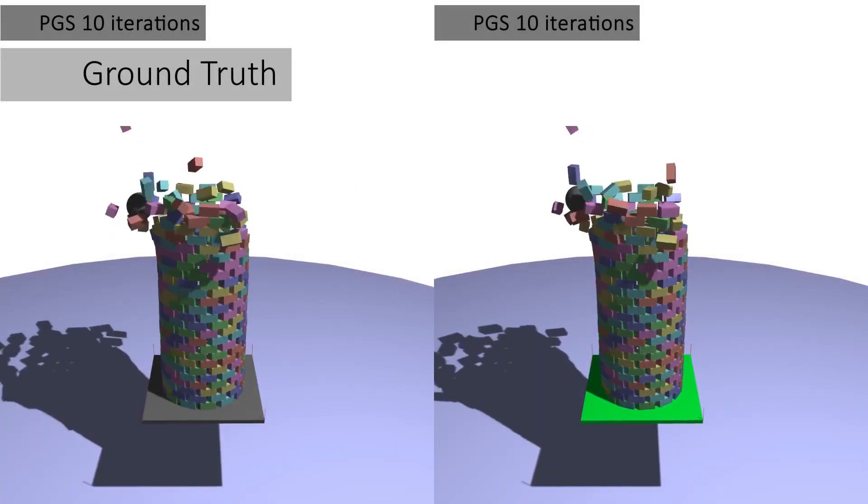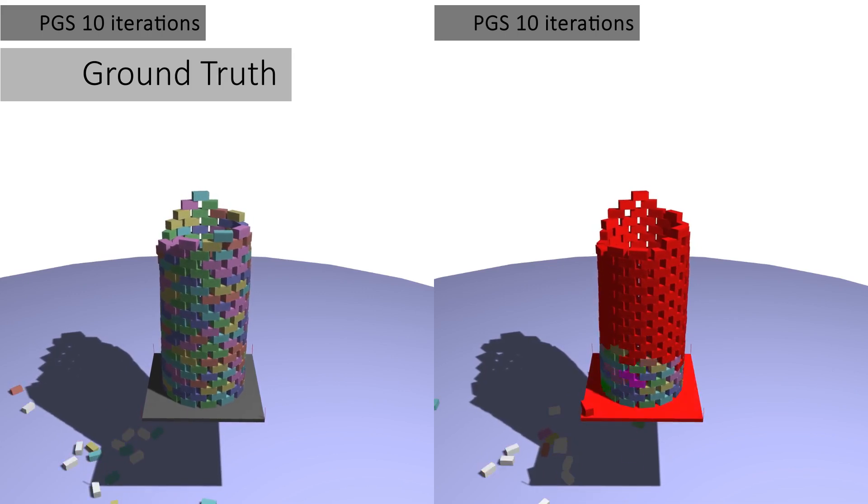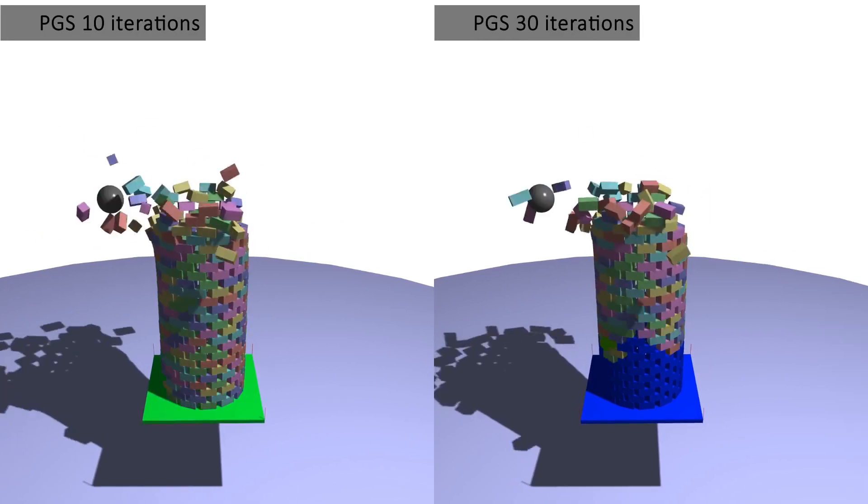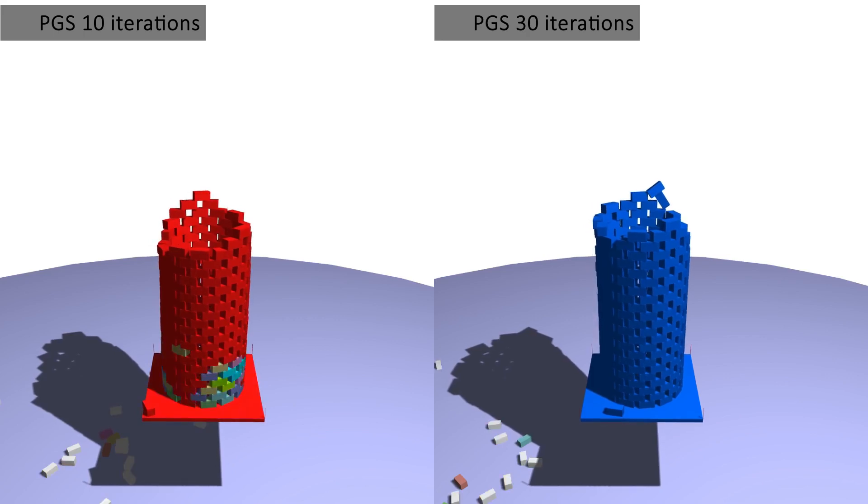Merging depends on set thresholds and the accuracy of the full LCP solve. Our merging technique works well using 10 iterations of PGS with warm starts for full LCP solves, but increasing the accuracy with more iterations allows collections to form and reform more quickly in this tower destruction scenario.